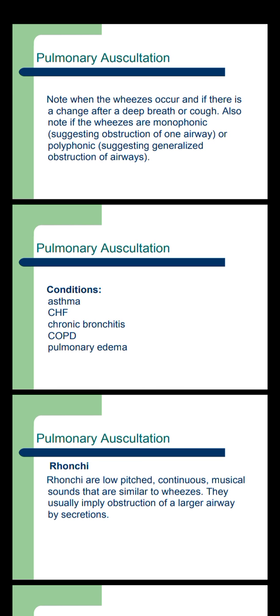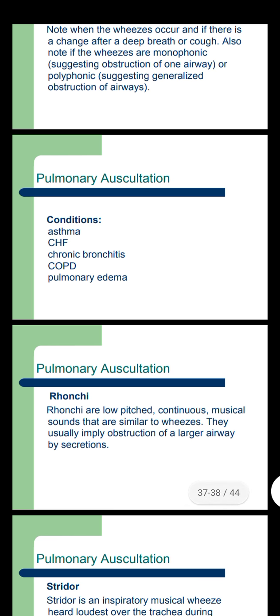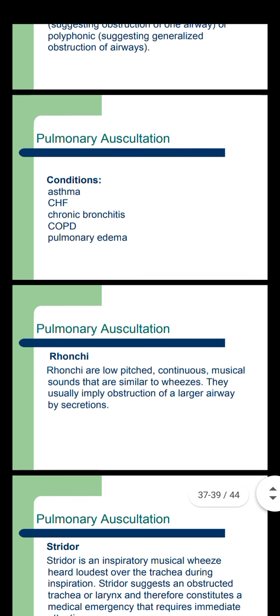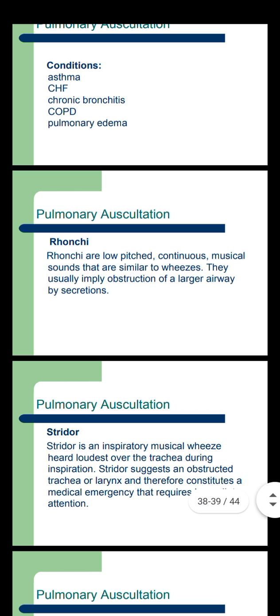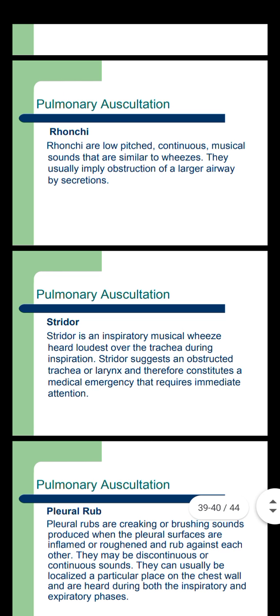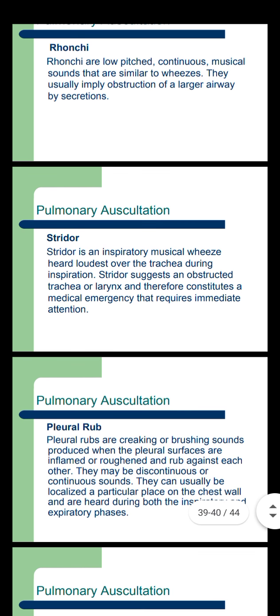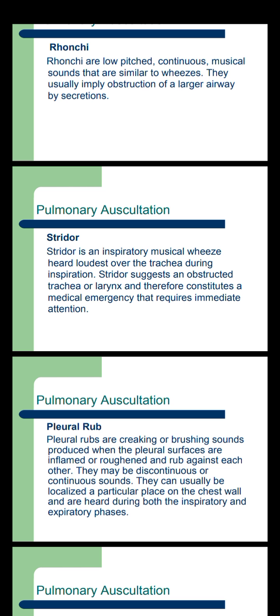Conditions associated with wheezes in pulmonary auscultation include asthma, CHF, chronic bronchitis, COPD, and pulmonary edema. Rhonchi are low-pitched, continuous musical sounds that are similar to wheezes. They usually imply obstruction of a larger airway by secretions. Stridor is an inspiratory musical wheeze heard loudest over the trachea during inspiration. Stridor suggests an obstructed trachea or larynx and therefore constitutes a medical emergency that requires immediate attention.